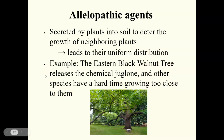Allelopathic agents are chemicals secreted by plants into the soil to stop the growth of competing plants nearby. This is one reason plants often show a uniform distribution in nature. The eastern black walnut tree is a good example — it releases a chemical called juglone into the soil from its roots. Other species cannot tolerate juglone, so they have a hard time growing near this tree, and you can see there are really no other trees or shrubs around it.